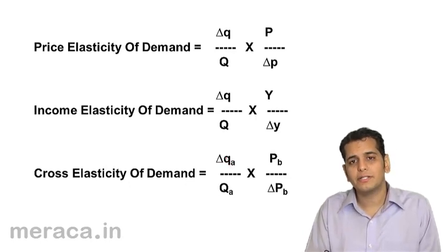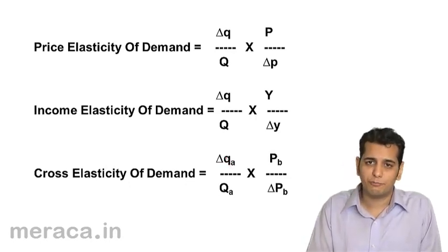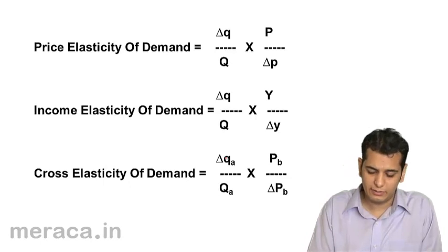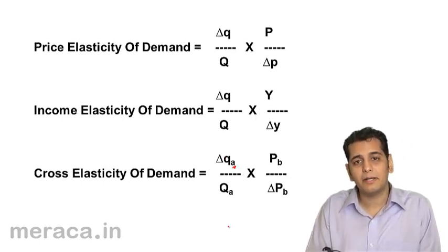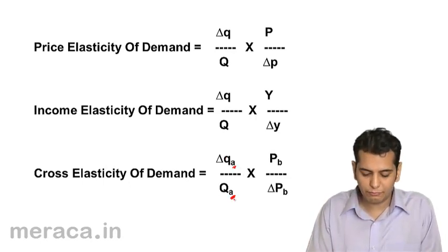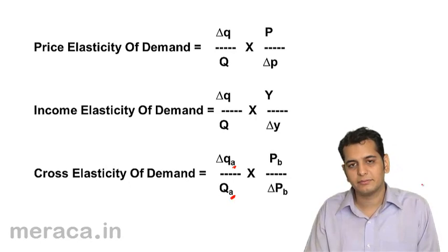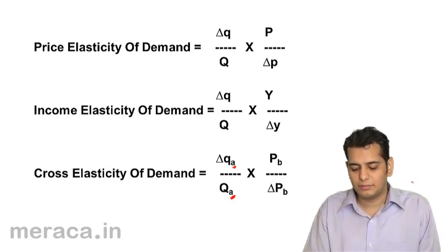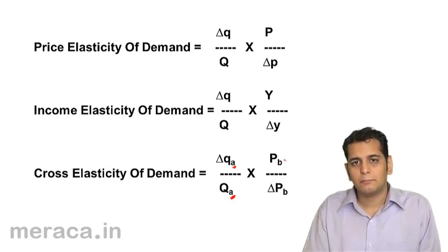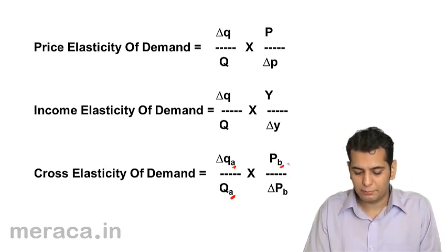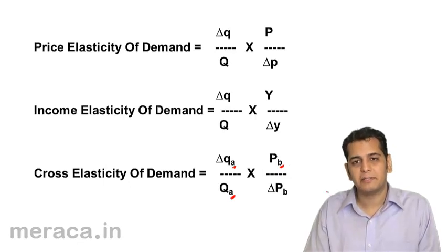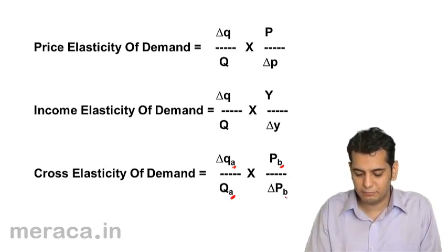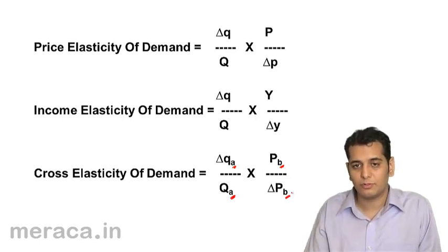Change in quantity demanded of product A — that is, change in quantity divided by original quantity of product A — multiplied by the price of product B divided by change in price of product B.